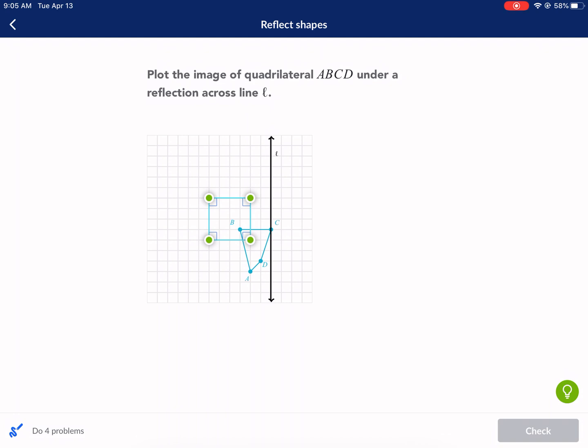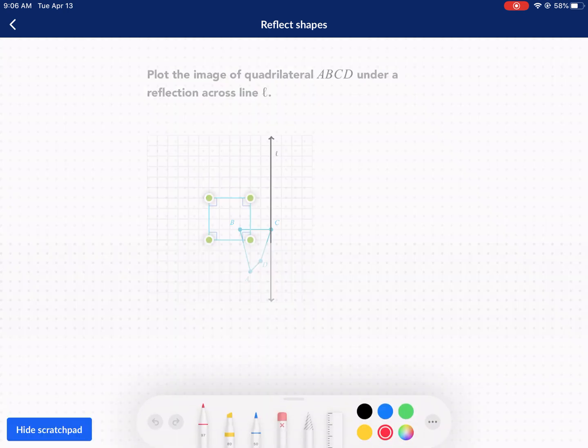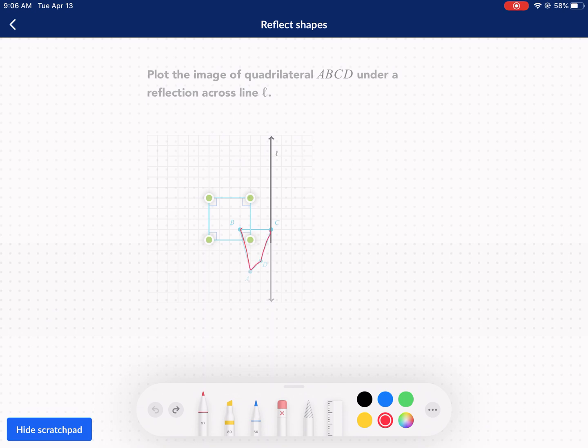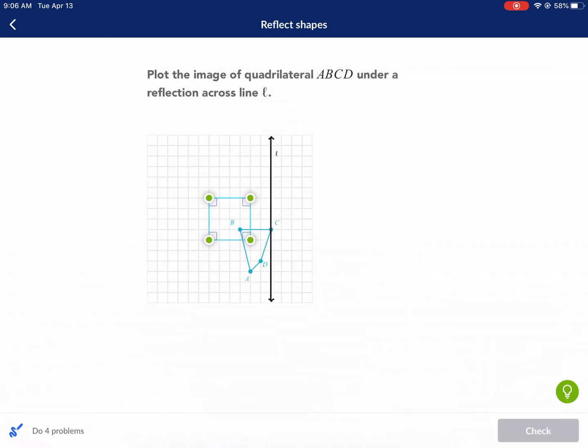So we have to plot the image of quadrilateral ABCD under reflection across line L. As you can see, line L is right here, and then the shape that we're required to reflect is this one. So we have to move the green one with the green vertices so it's reflected across this line. Let me first just move this out of the way. You can move each one of these vertices independently. Now, what does it mean to reflect?